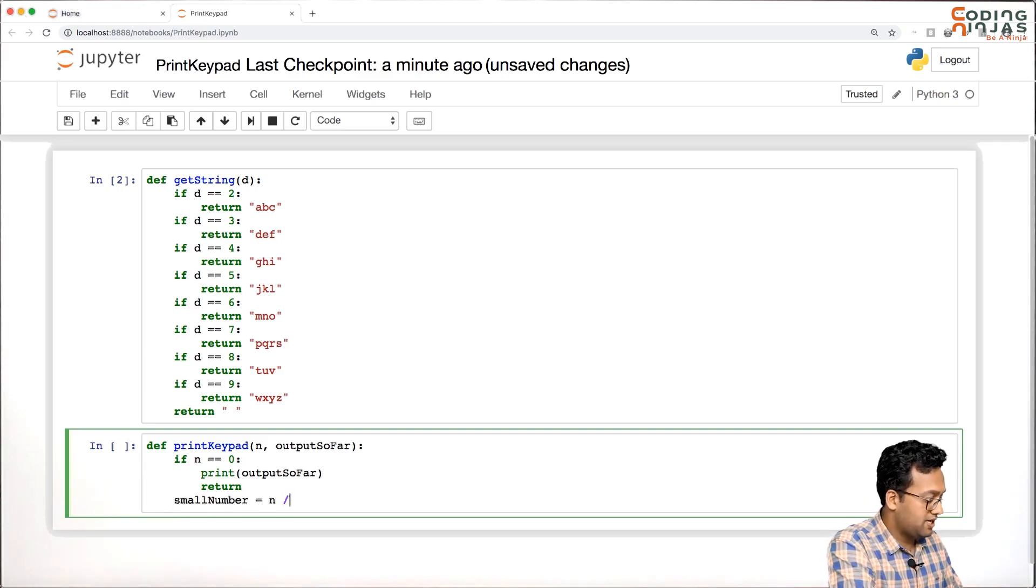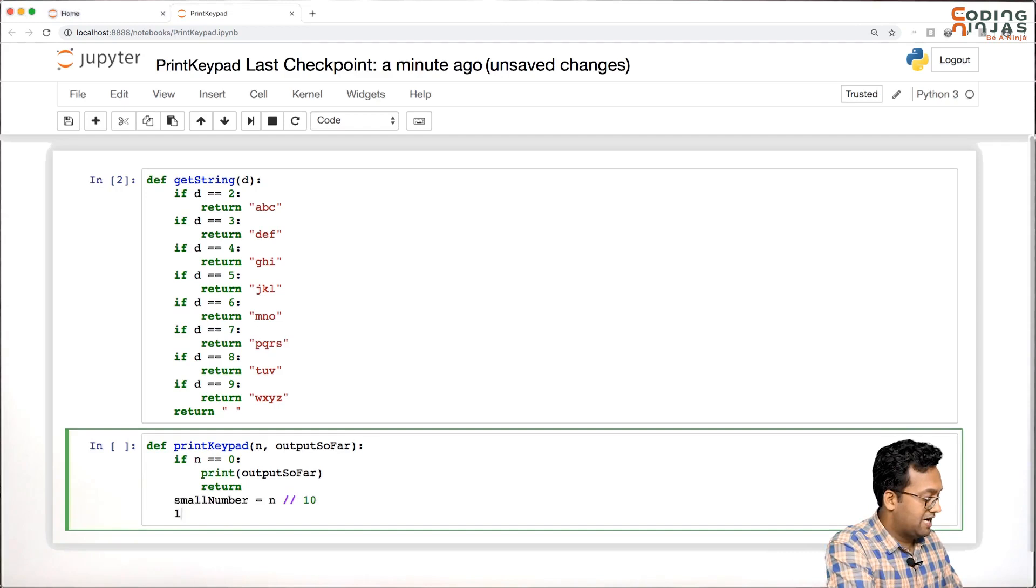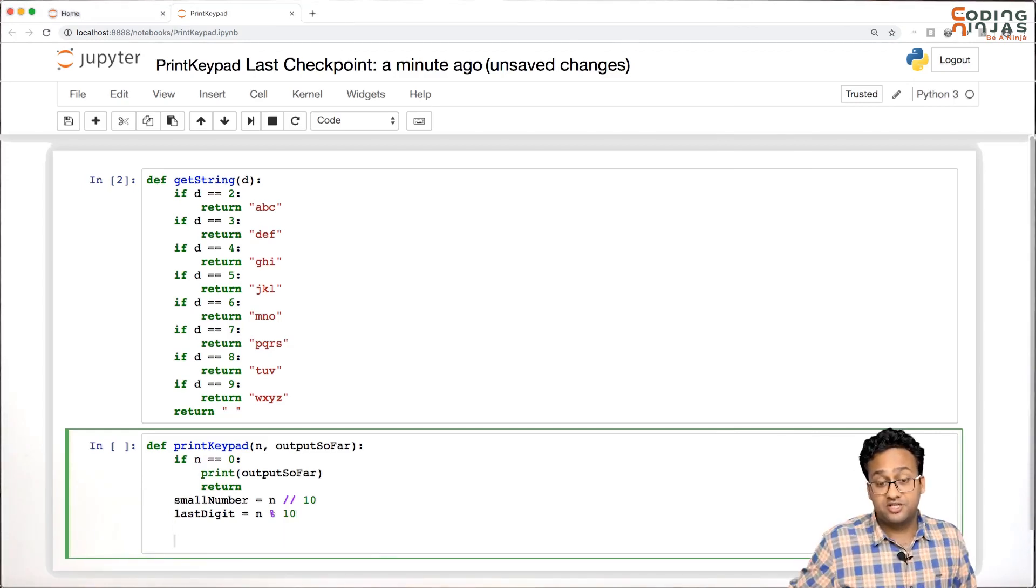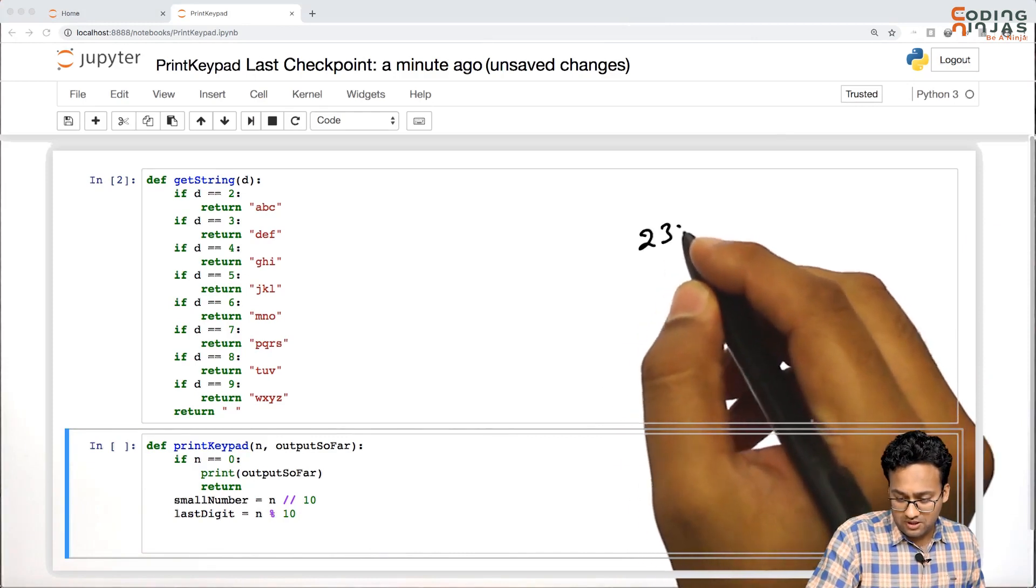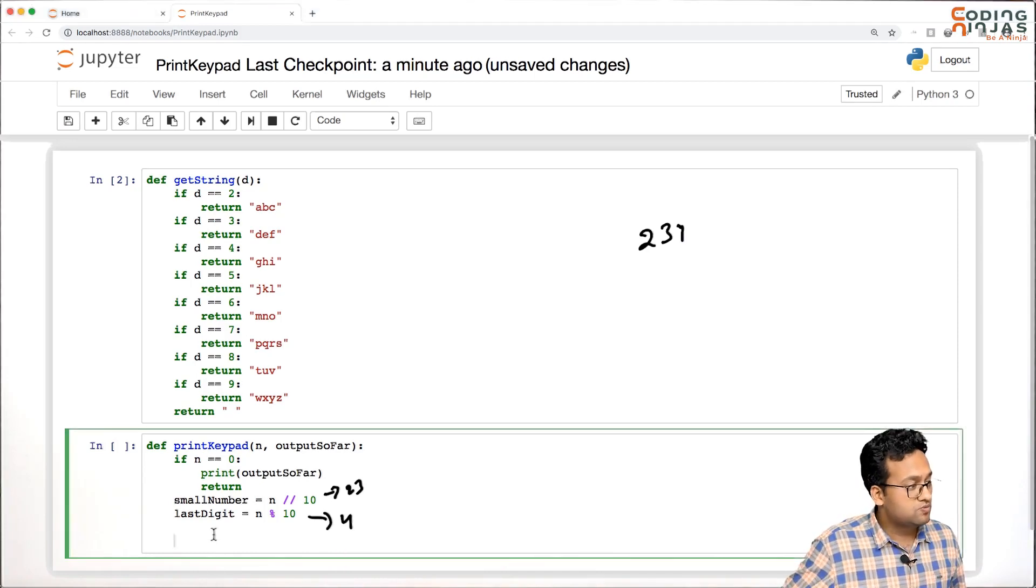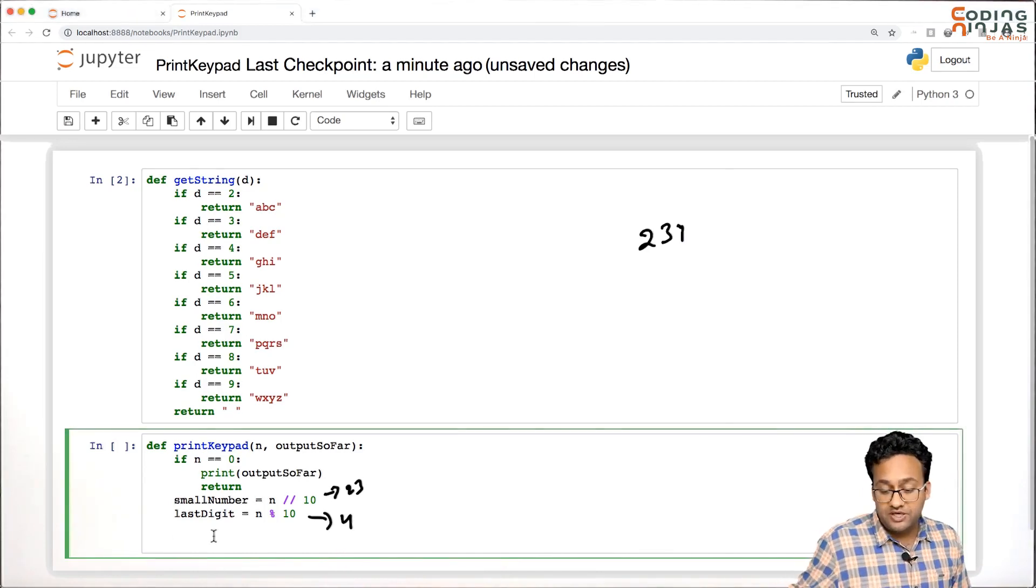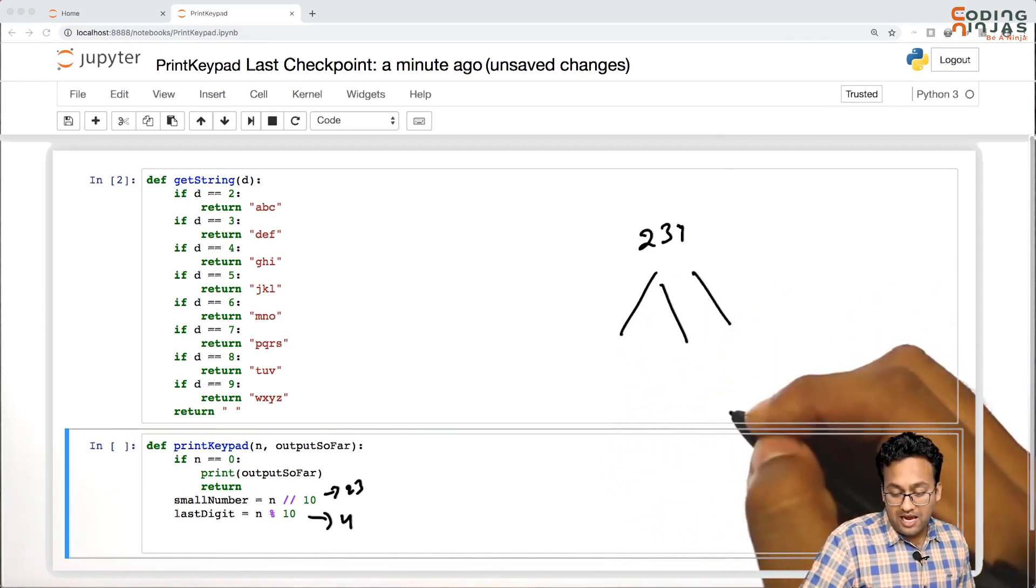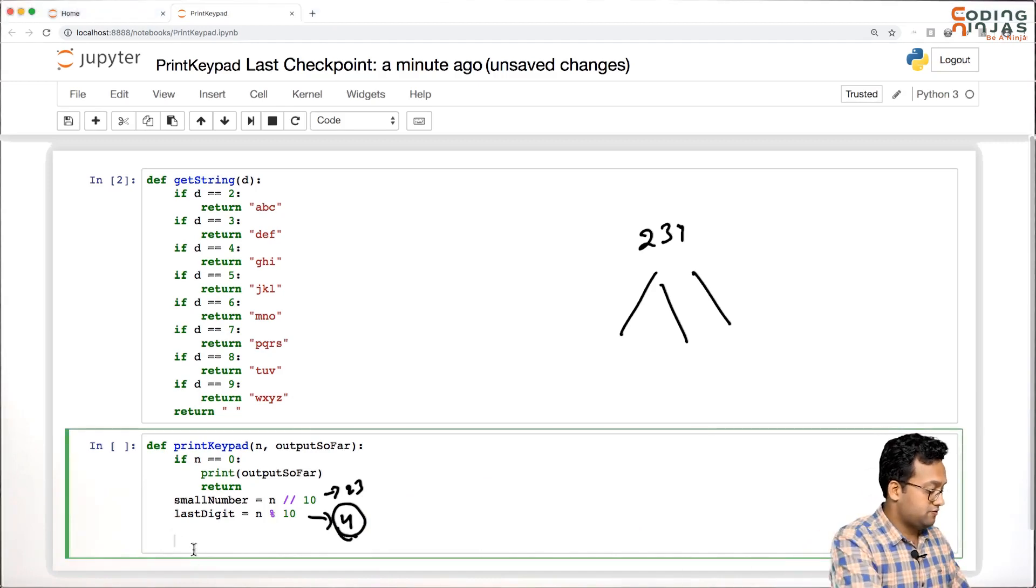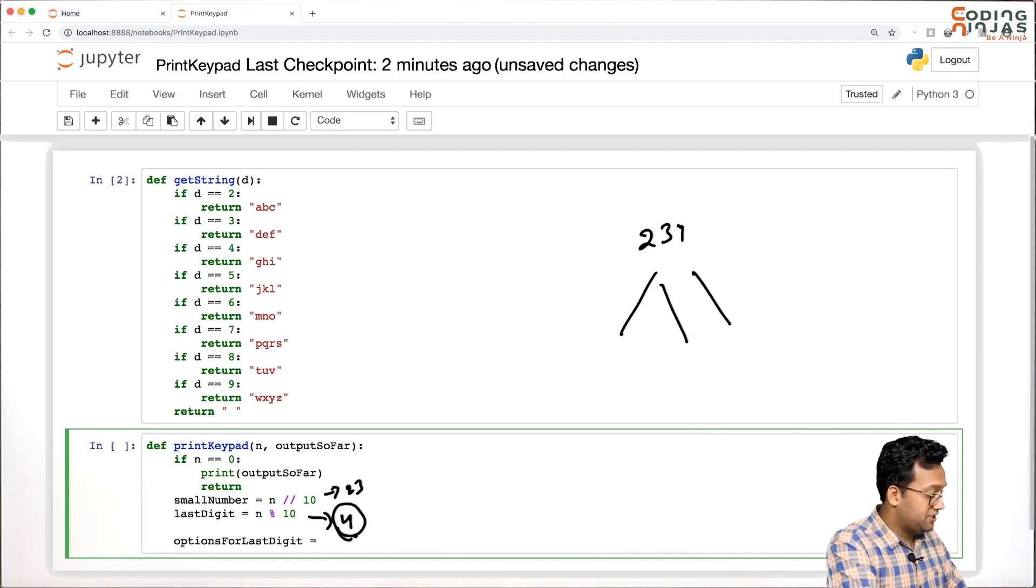Otherwise, we need to find the small number. Small number is n by 10, and last digit is n percentage 10. So if I have 234, this is 23 and this is 4. We will basically need to call recursion as per the number of options I have for 4. Let's find the options for last digit - that will be get_string called on last digit.